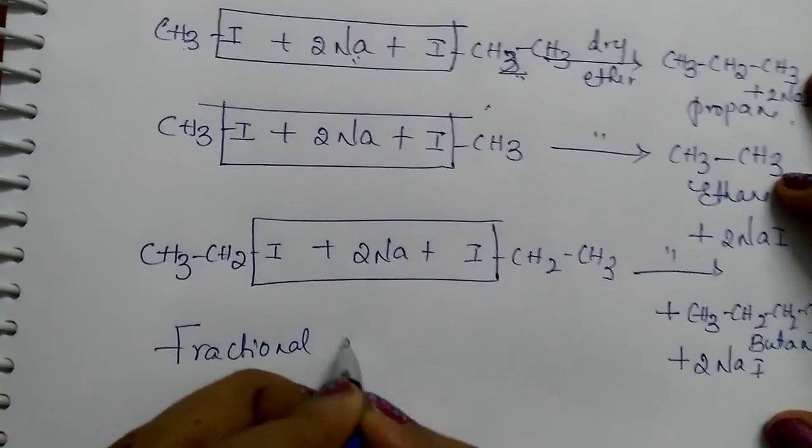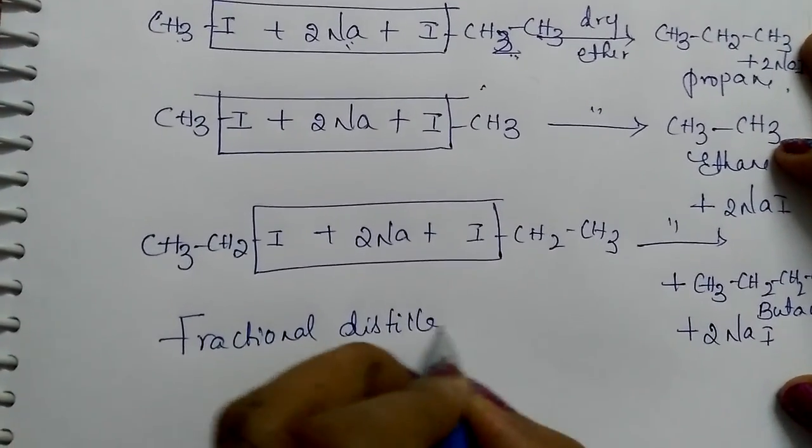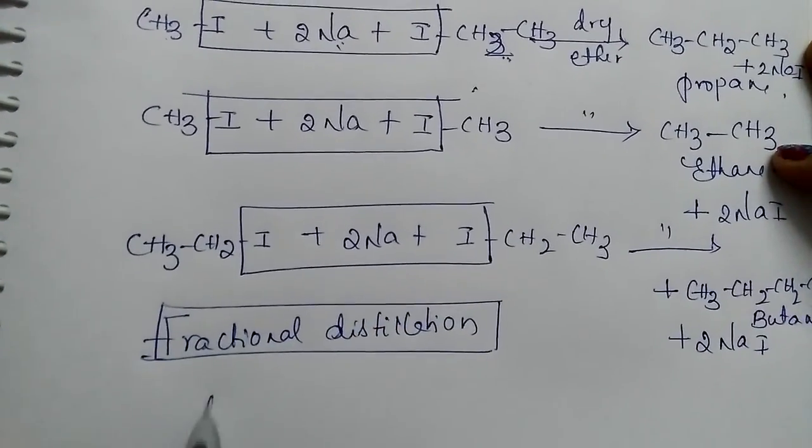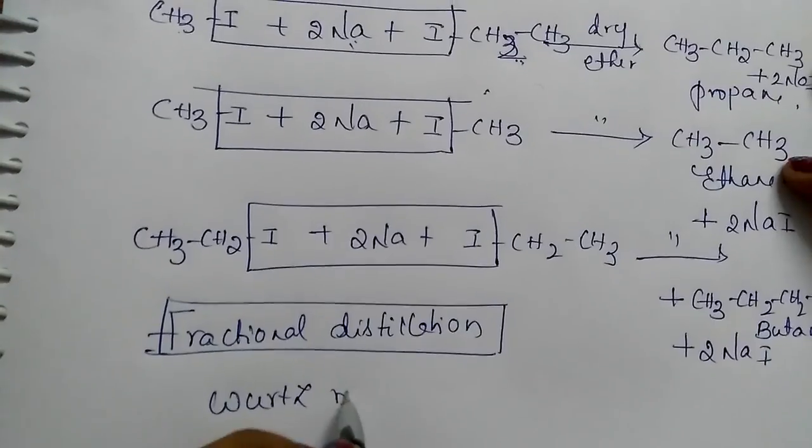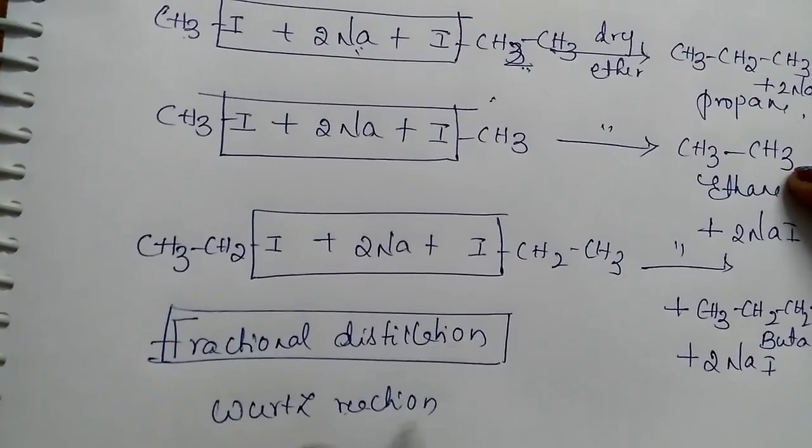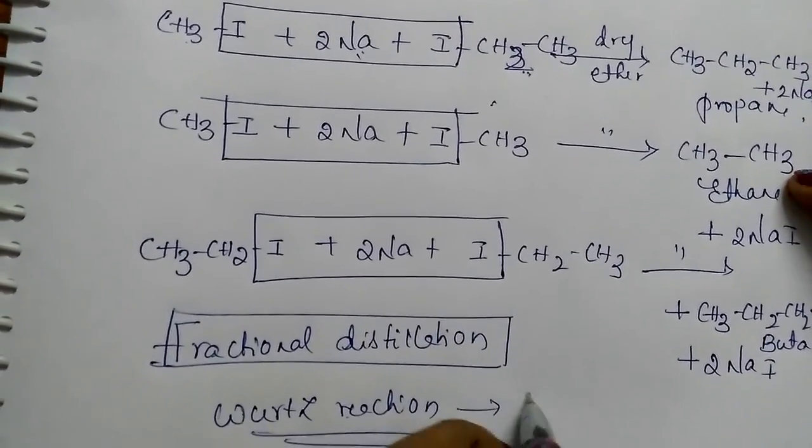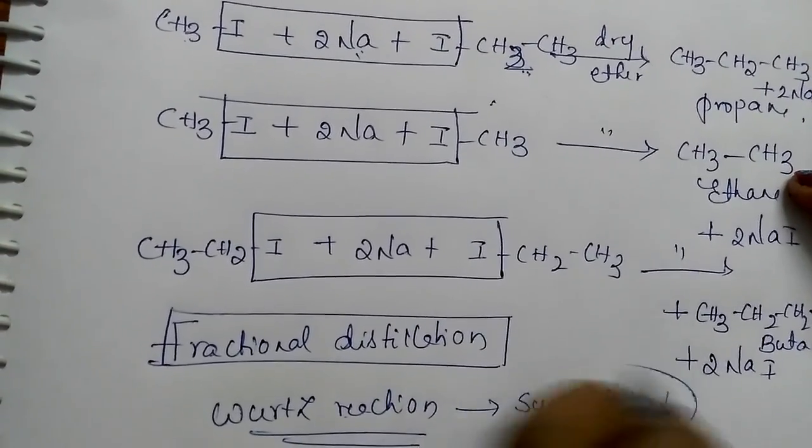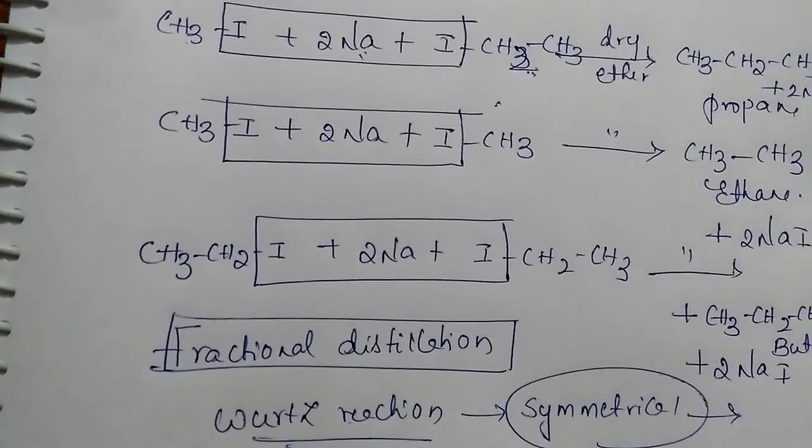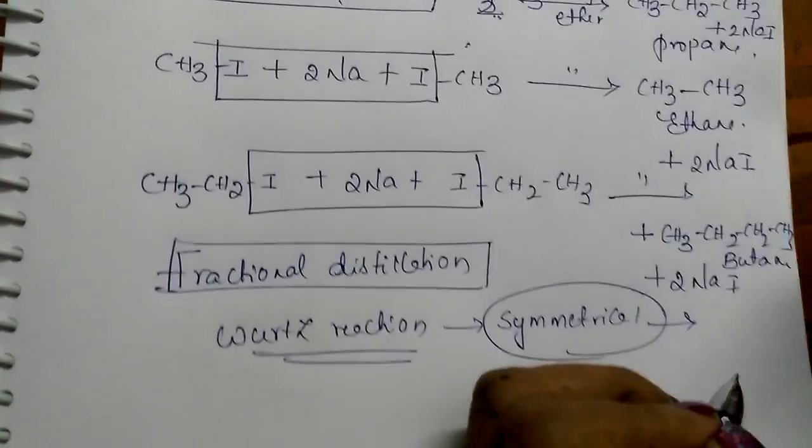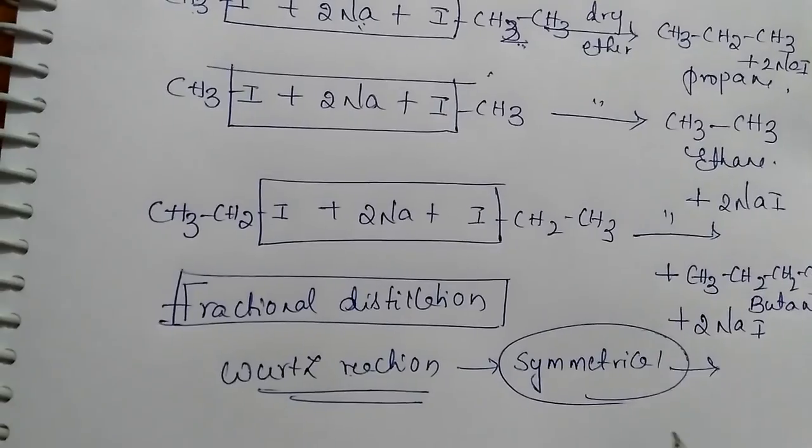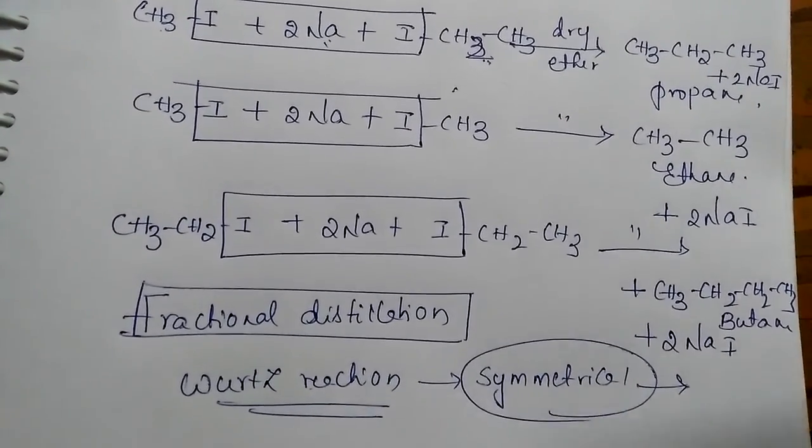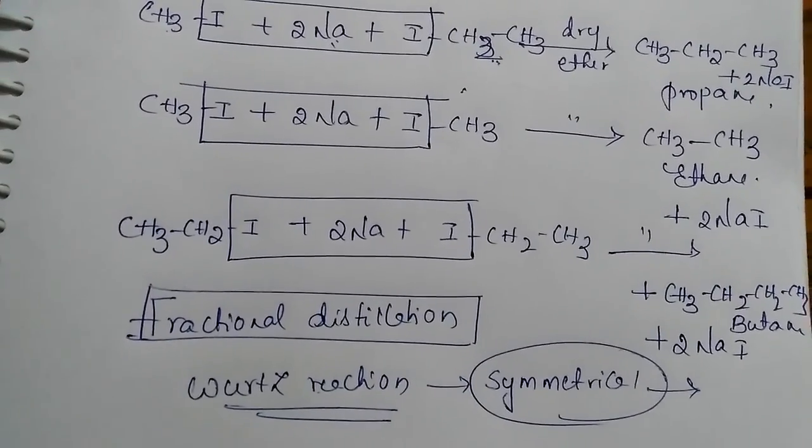Fractional distillation is very difficult to separate. This is the reason Wurtz reaction is useful only for the preparation of symmetrical alkanes, not for unsymmetrical alkanes. Symmetrical alkanes give even number of carbon atoms in the product. The reason is the similar, very close boiling points.